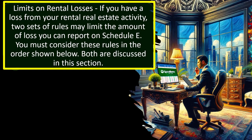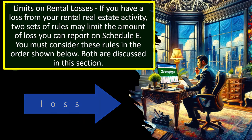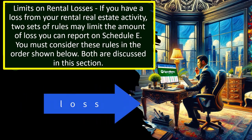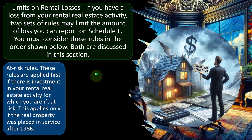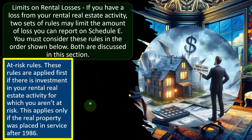Keeping that in mind — limits on rental losses. If you have a loss from your rental real estate activity, two sets of rules may limit the amount of loss you can report on Schedule E, and you must consider these rules in the order shown. First, the at-risk rules, which are applied first if there are investments in your rental real estate activity for which you aren't at risk.